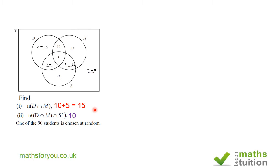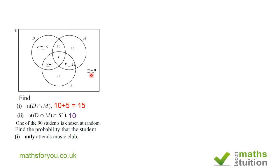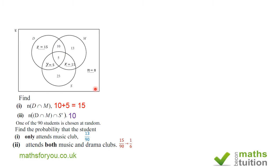One of the 90 students is chosen at random. Find the probability that the student only attends music club — that's this region here, which is 13 over 90. The second part says attends both music and drama clubs, which is D intersection M, so the answer is 15 over 90, which simplifies to 1 over 6. Leaving the answer as 15 over 90 is also acceptable in an exam.